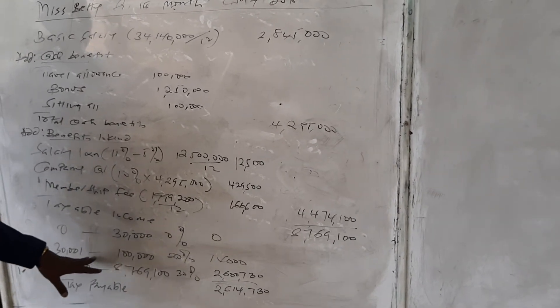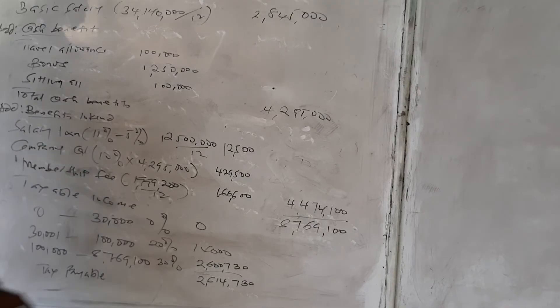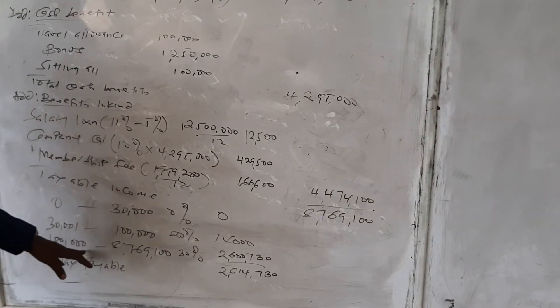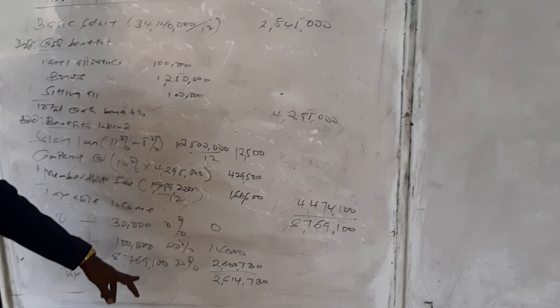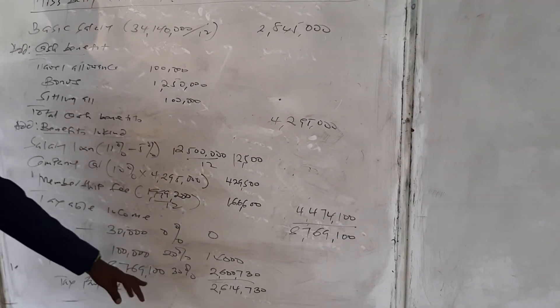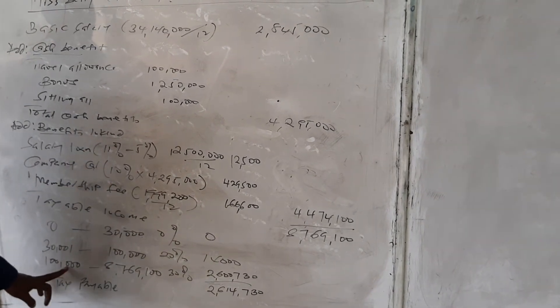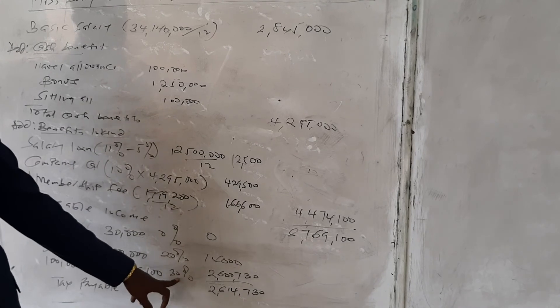Above 100, which is 8,769,100, is taxed at 30%. The difference you multiply by 30 gives you this amount. Therefore, the tax payable or tax liability is 2,614,730.